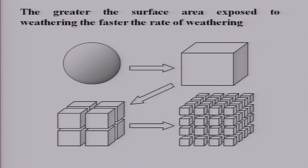As shown in this diagram, if you break a cube into smaller and smaller pieces, more area is exposed per unit volume. The greater the surface area exposed to weathering, the faster the rate of weathering. This is why smaller broken pieces of rock will weather more than an unbroken piece.